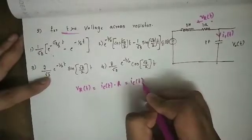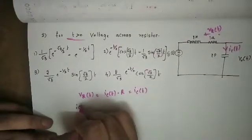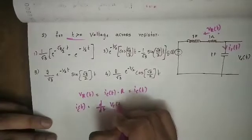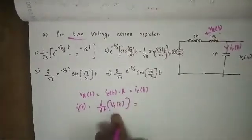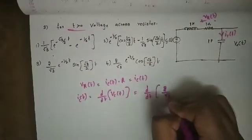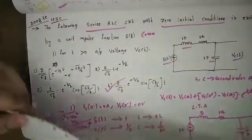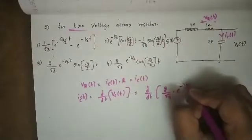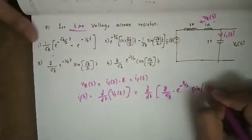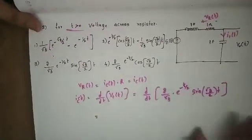Vr(t) = ic(t), since it is a series circuit and the same current flows. And ic(t) = d/dt of Vc(t). R = 1 ohm, so Vr(t) = ic(t) · R = ic(t). So Vr(t) = d/dt of [(2/√3) · e^(-t/2) · sin(√3t/2)].